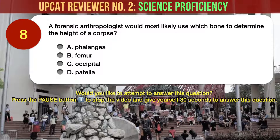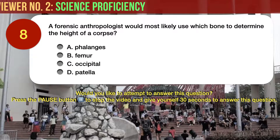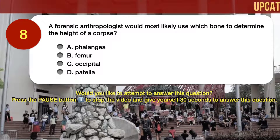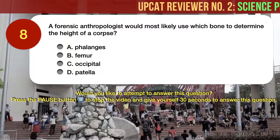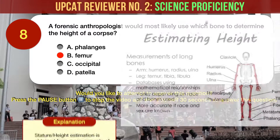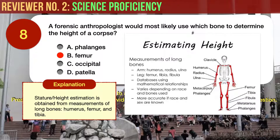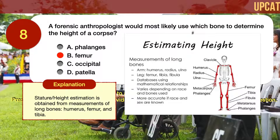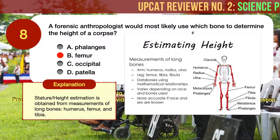Question number 8. A forensic anthropologist would most likely use which bone to determine the height of a corpse? A, phalanges. B, femur. C, occipital. D, patella. The correct answer is B, femur. Stature or height estimation is obtained from measurements of long bones, namely the humerus, femur, and tibia. If these bones are unavailable, the ulna, radius, and fibula can also provide a good range for the expected height of an individual.